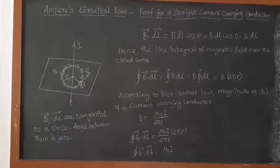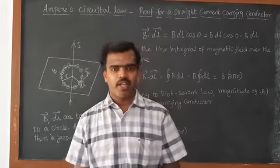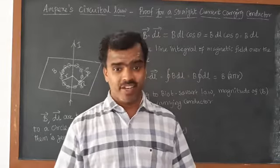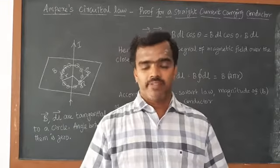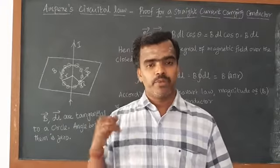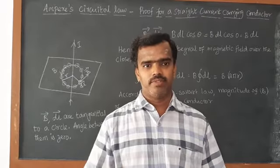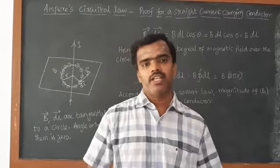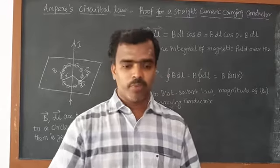Here we are going to prove Ampere's Circuital Law. As we know, Ampere's Circuital Law states that the line integral of B-vector dot dL-vector is equal to mu-0 times I. We are going to prove this equation using a current-carrying conductor and Biot-Savart Law. Ampere's Circuital Law is a modified form of Biot-Savart Law.